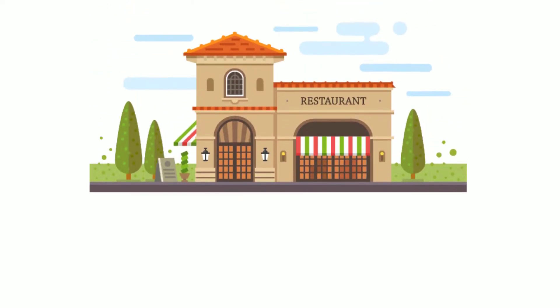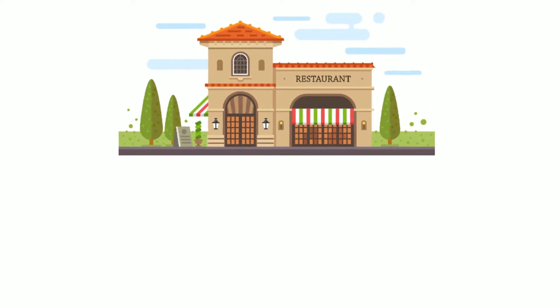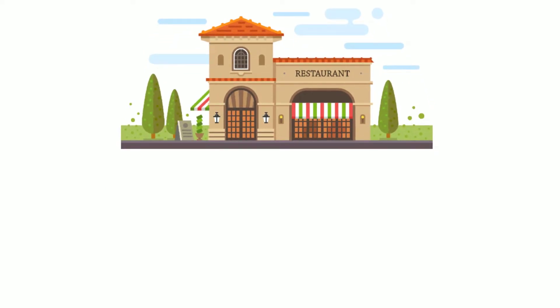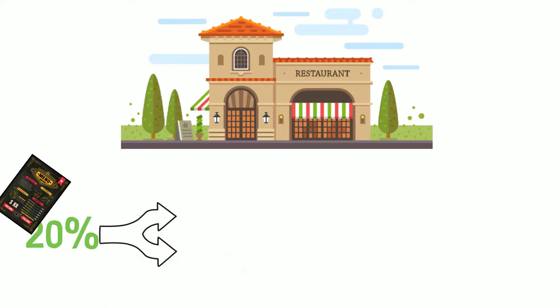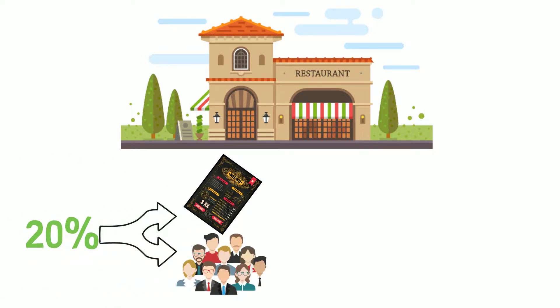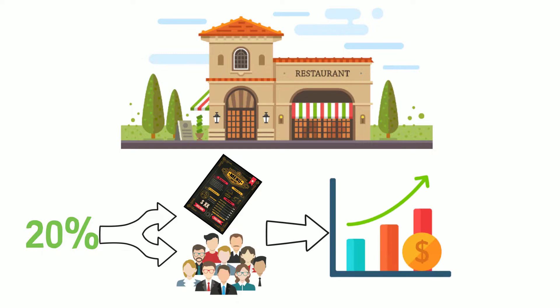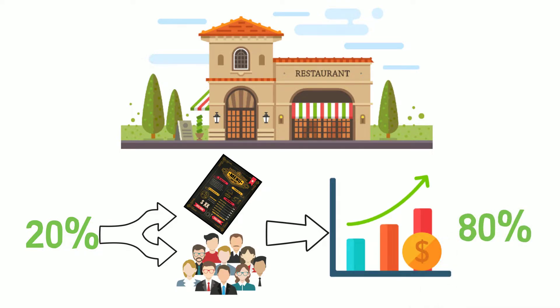How can we apply the 80-20 rule in our lives? In a business environment, using the restaurant example, we have seen that 20% of the products represent 80% of the orders. This applies to our customers as well, with 20% of our customers representing 80% of our revenue.